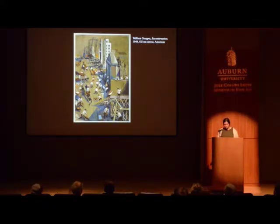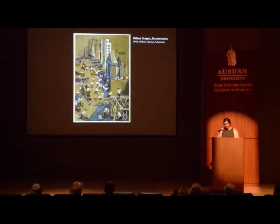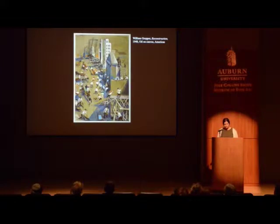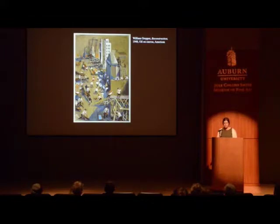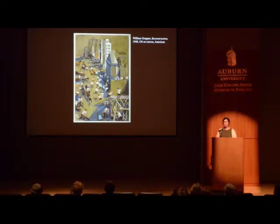Gropper and his family were living in poverty on the Lower East Side when, in 1911, his aunt died in the Triangle Shirtwaist Factory fire due to poor working conditions. This tragedy was the largest industrial disaster New York City had ever seen. Undoubtedly, Gropper gained a distrust of capitalism in his formative years.